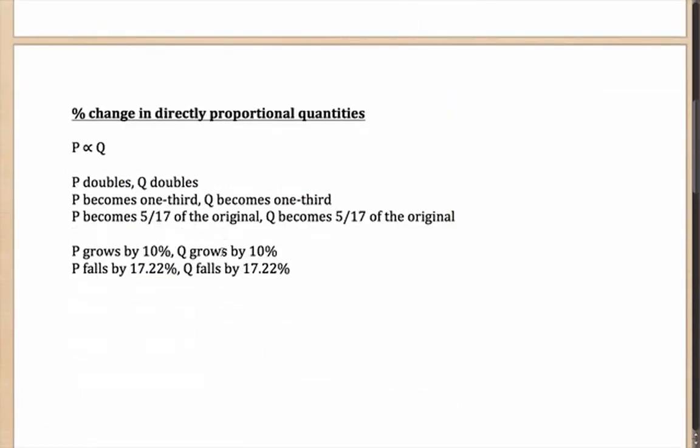To begin with, let's say percentage change in directly proportional quantities. Suppose I am given two quantities P and Q which are directly proportional to each other. What it means is, if P doubles, Q doubles. If P becomes one-third of the original, Q also becomes one-third of the original. If P becomes 5/17 of the original, Q also becomes 5/17 of the original.